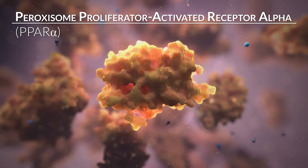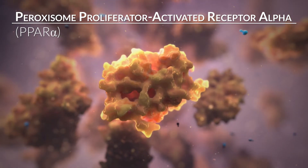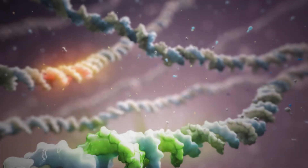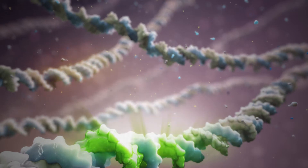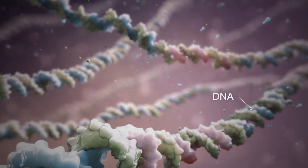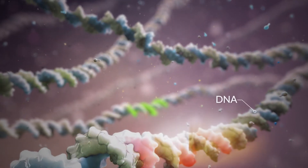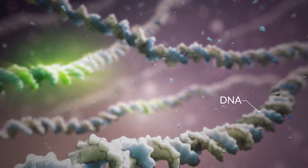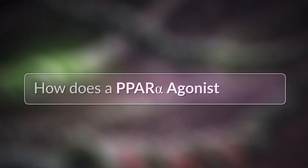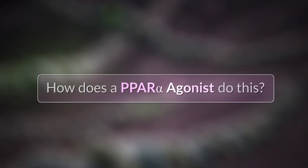We consider stimulation of the nuclear receptor PPAR-alpha as a kind of gene therapy. But unlike actual gene therapies, PPAR agonists affect the expression of several genes at a time. How does a PPAR agonist do this?